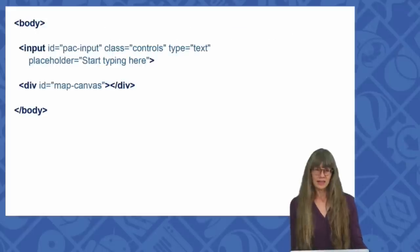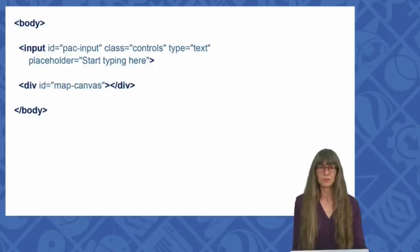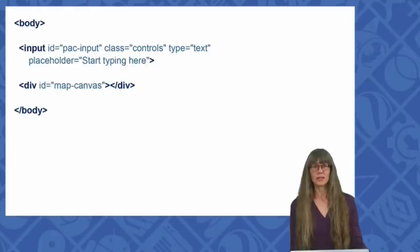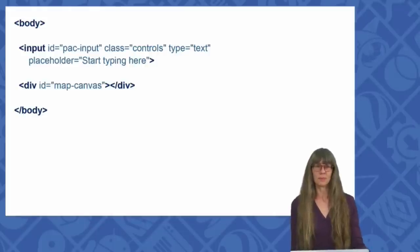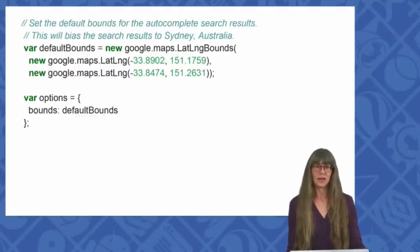Autocomplete adds a text input element to your page, and responds with predictions when the user types into the text box. So we need to define an HTML input element of type text. And next, we can set some options for the autocomplete widget.